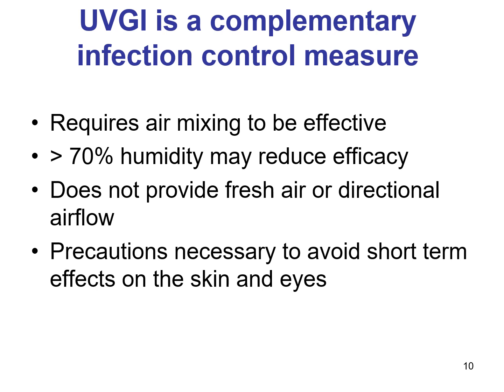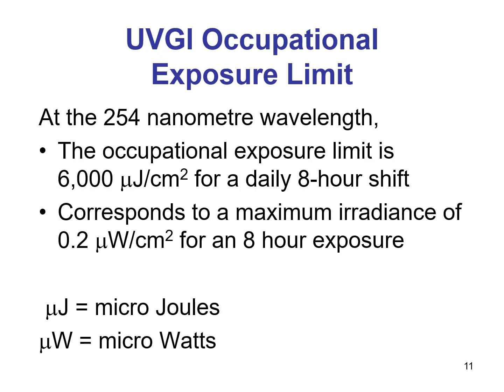As a control measure, UVGI requires air mixing to be effective. More than 70 percent humidity may reduce its efficacy. It does not provide pressure differentials or directional airflow, and precautions are necessary to avoid short-term effects on skin and eyes. The specific germicidal wavelength is 254 nanometers. OSHA recommends that exposure to UVGI be less than 6,000 microjoules per centimeter squared over a daily eight-hour period on unprotected skin or eyes, corresponding to a maximum irradiance level of 0.2 microwatts per centimeter squared for eight hours of exposure.